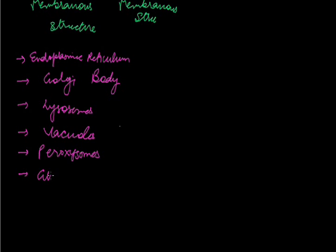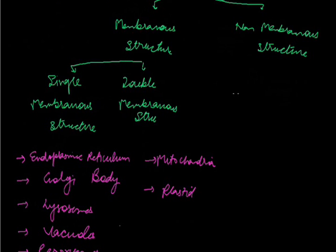Single membranous structure contains endoplasmic reticulum, golgi apparatus or golgi body, lysosomes, and glyoxosomes. While the double membranous structure contains mitochondria and plastids. While the non-membranous structure includes ribosomes, centrosomes, and cytoskeletal elements.